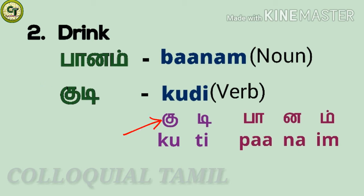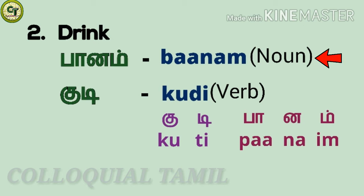For the verb 'drink': kudi. Ku, a short zone letter. T, a short zone letter — while speaking, t may also sound as d in some words. Together: kudi. So the noun form is baanam and the verb form is kudi.